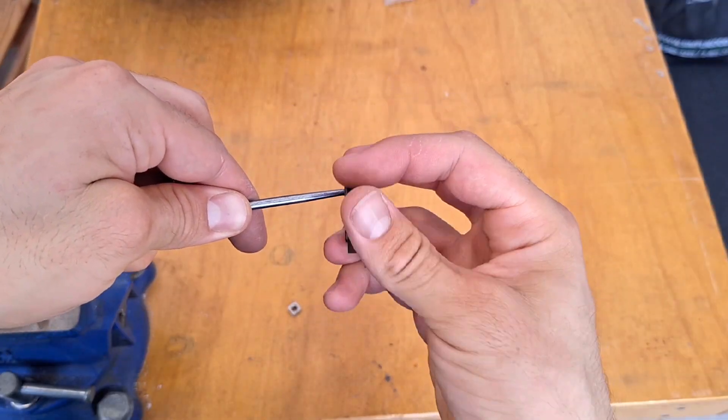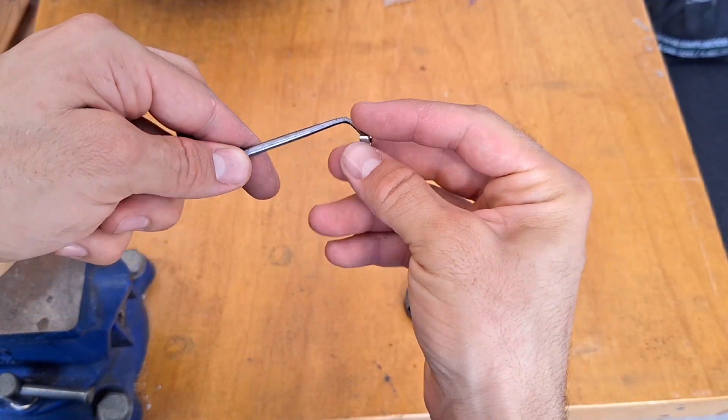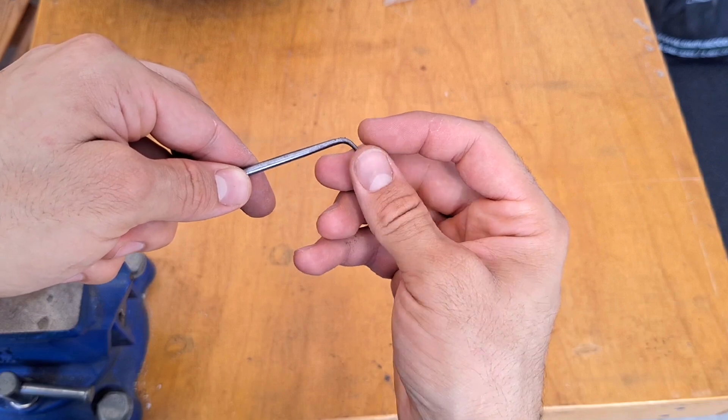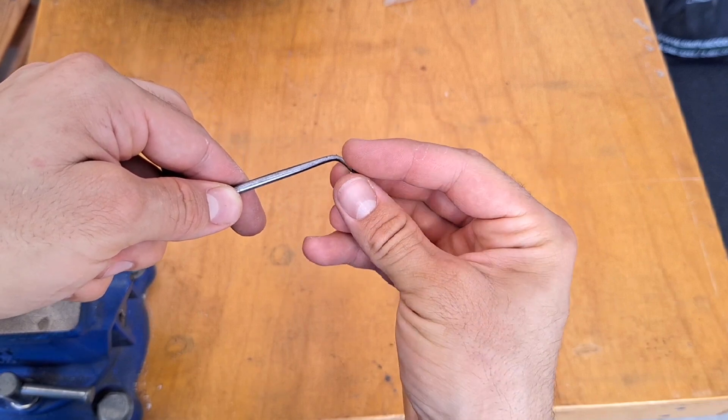When a nut doesn't fit any bolt and I can't determine by eye if it may be a left-hand thread, I simply use an engineer's scriber. I found this especially useful for finer threads.